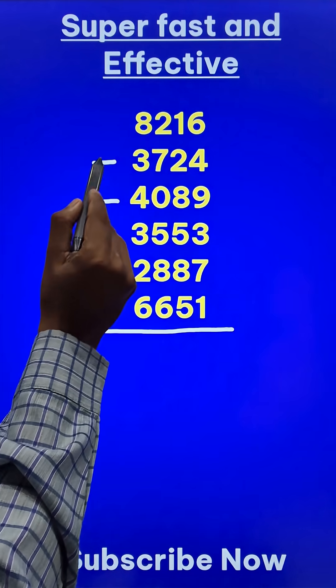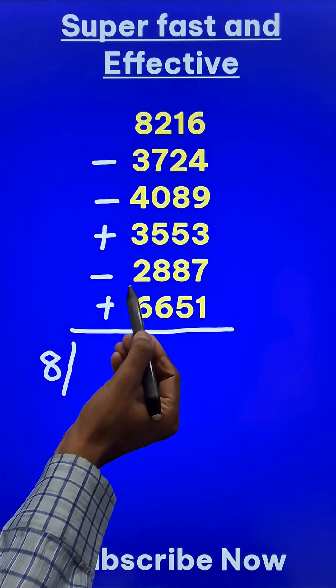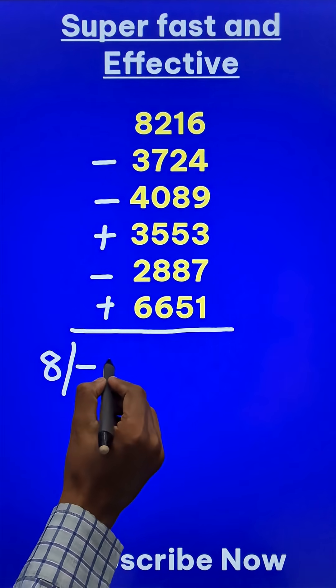let's take the second digits, 2 minus 7 is minus 5, then we have a 0, so minus 5 plus 5 is 0, minus 8 and plus 6 which gives me a minus 2.